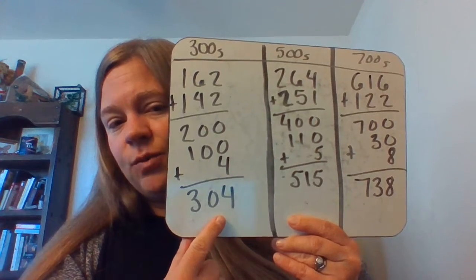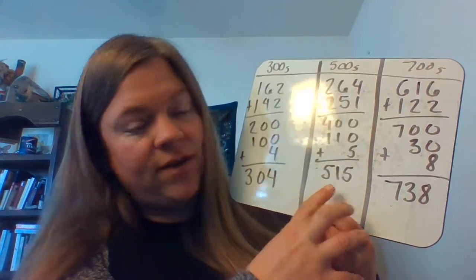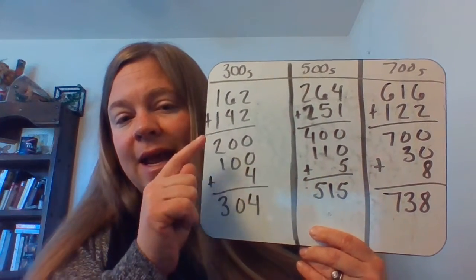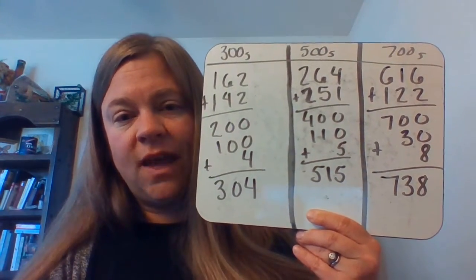So if you notice, I have an answer of 304, of 515, and then of 738. And I used partial sums to solve each of these.